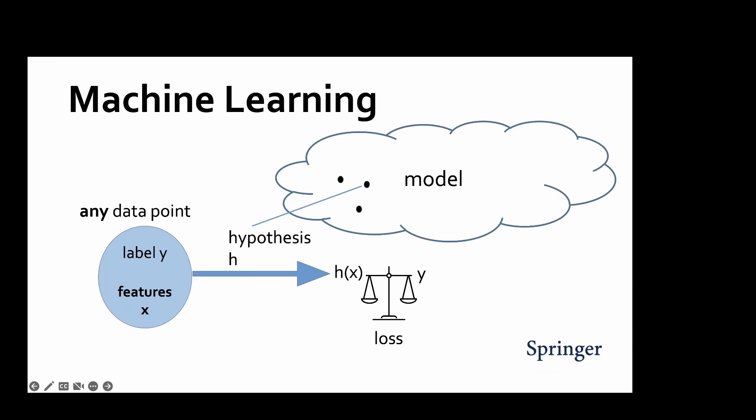Machine learning methods learn a hypothesis H of X from a model that predicts any data point's label Y from its features X. A loss function measures the discrepancy between the prediction and the true label.